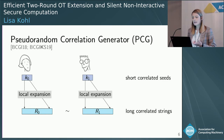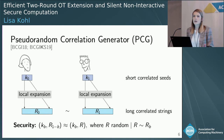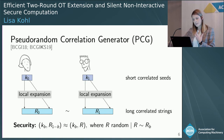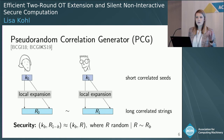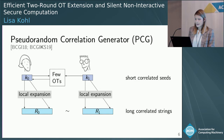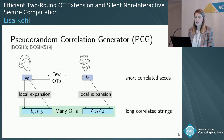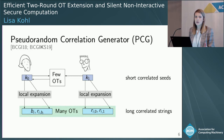What we want there is correctness: if you have correlated seeds, the strings should be correlated in some desired way. And security: if Alice just knows her seed, then Bob's output should look like an output that is randomly sampled, conditioned on being correlated to Alice's seed. This captures all protocols where you allow the corrupted party to choose their randomness and sample the honest party's output conditioned on being in correlation. If you get a PCG for the OT correlation, then you will get many pseudorandom OTs, which is good enough for secure computation.